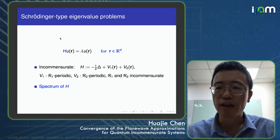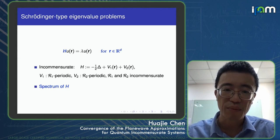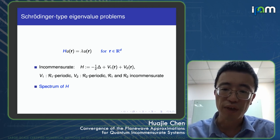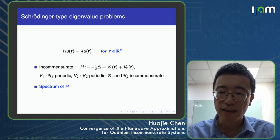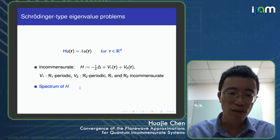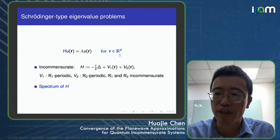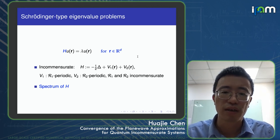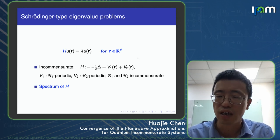The problem we consider is a simple Schrödinger-type eigenvalue problem. We are interested in the spectral distribution of the Hamiltonian H. The operator consists of a Laplacian corresponding to the kinetic term, and potentials V1 and V2, which are periodic with respect to their own lattices R1 and R2, where R1 and R2 are incommensurate. The first difficulty is that the operator is defined on the whole space, loses compactness, and the spectrum becomes continuous.